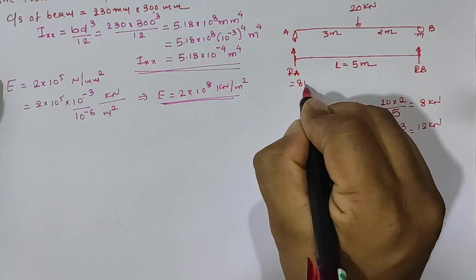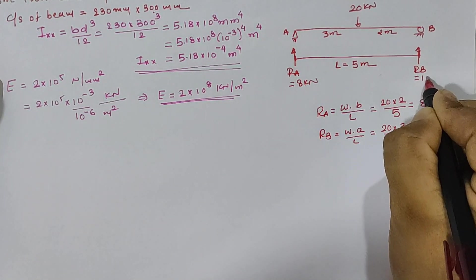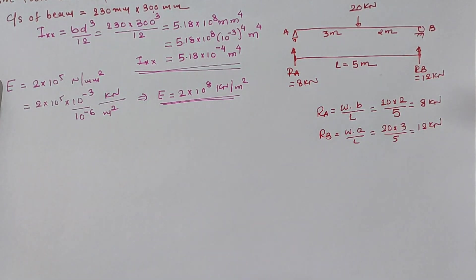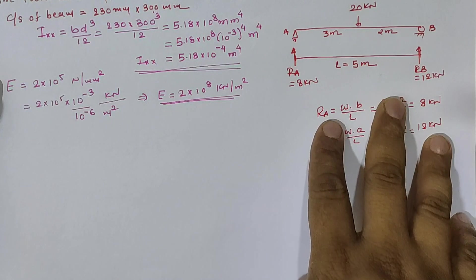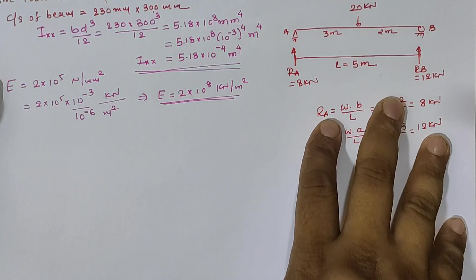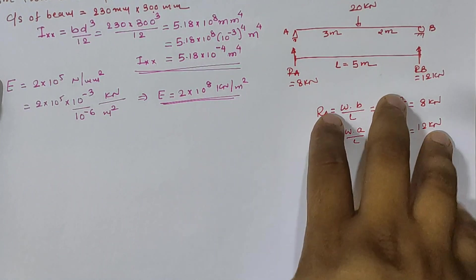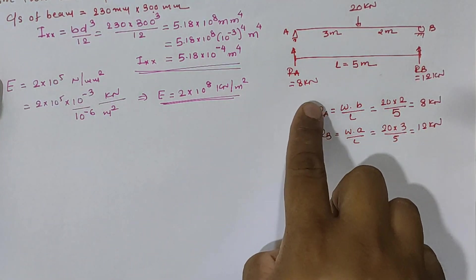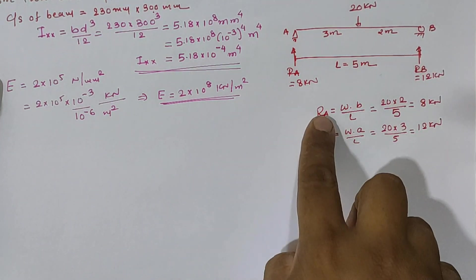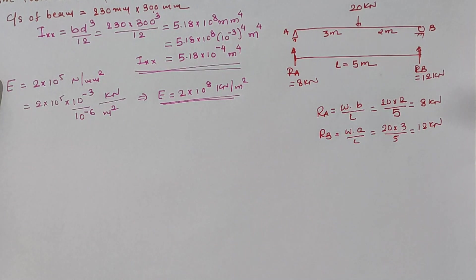So our Ra value is 8 kN and Rb value is 12 kN and if we solve this beam with respect to three equilibrium conditions which is ΣV=0, ΣH=0 and moment at any support equal 0, then also we get same result for Ra and Rb. Now, going for the calculation steps.